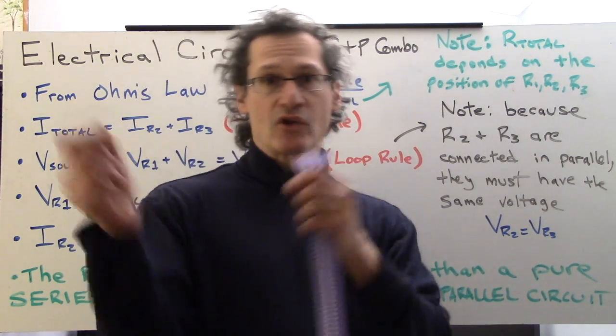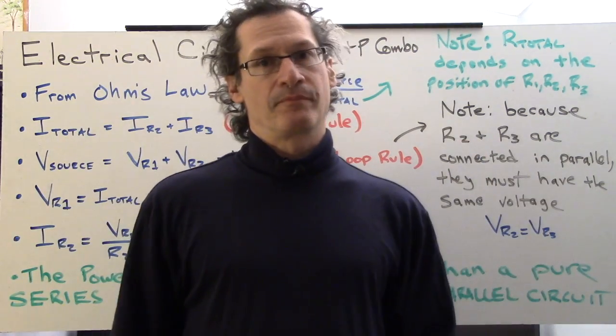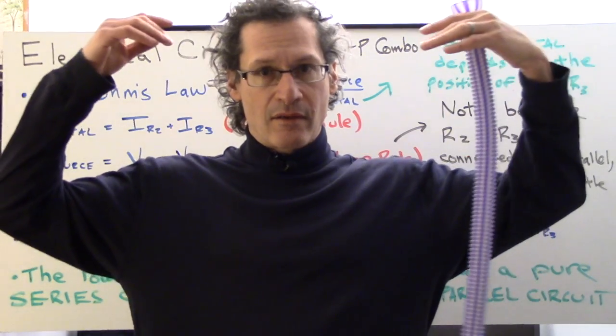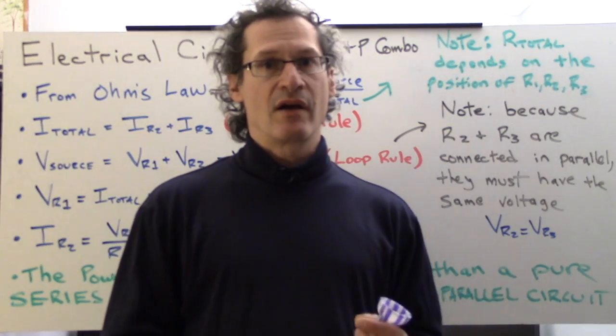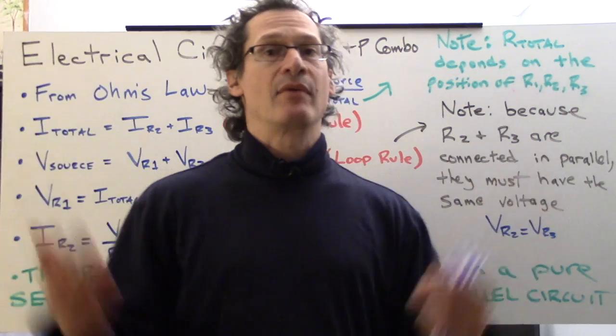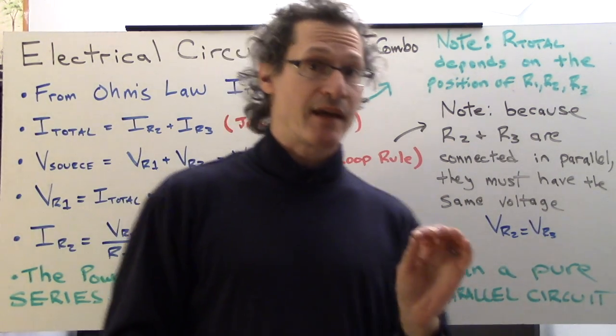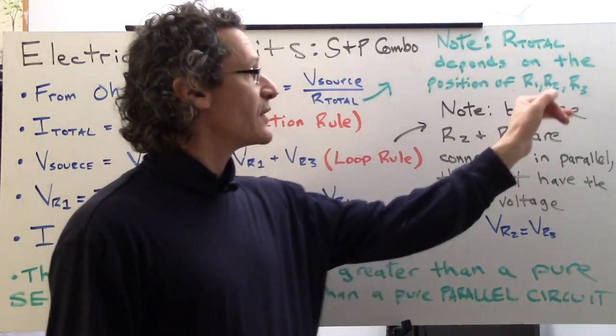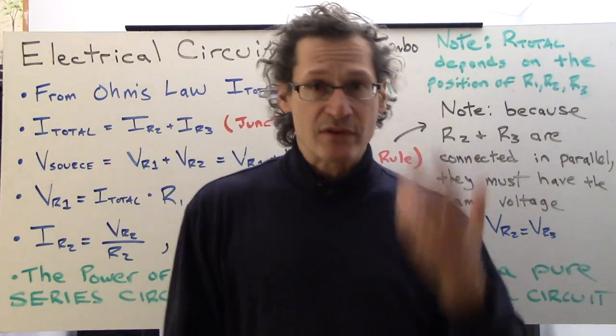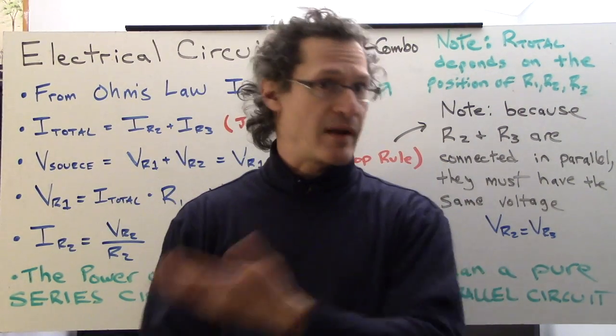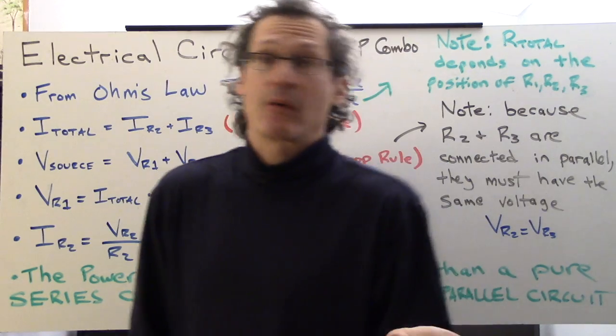In the series circuit, you can interchange the resistors and get the same R total. In the parallel circuit, if you switch the positions of each of the resistors, you have the same R total. Not so in this case. That's why we've got to be really careful with the analysis because these R1, R2, and R3 positions do determine R total and the rest of the behavior of the circuit, including how much power it consumes.